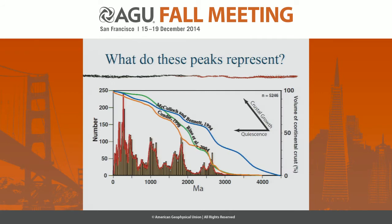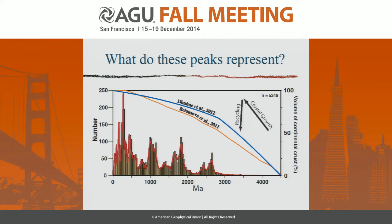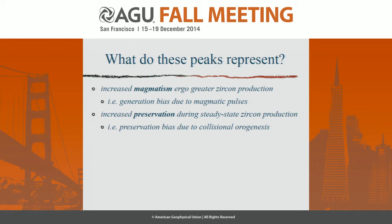The first is episodic growth, where crustal growth increases quickly and then you have periods of quiescence, then crustal growth and quiescence again. The other set of models is more of a steady-state crustal growth, but the peaks and troughs we see in the zircon record and other geologic proxies represent crustal recycling. So either the episodicity in the detrital zircon record represents increased magmatism — greater zircon production during certain periods — or it represents increased preservation during steady-state zircon production, giving us a preservation bias.